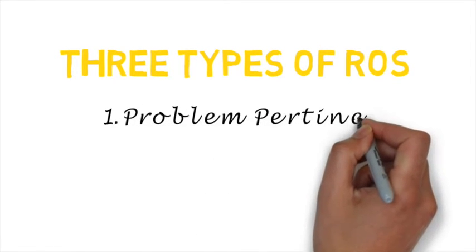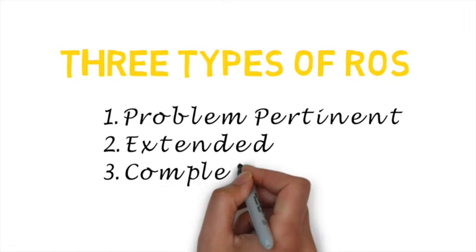Typically, there are three different types of review of systems: Problem Pertinent, Extended, and Complete.